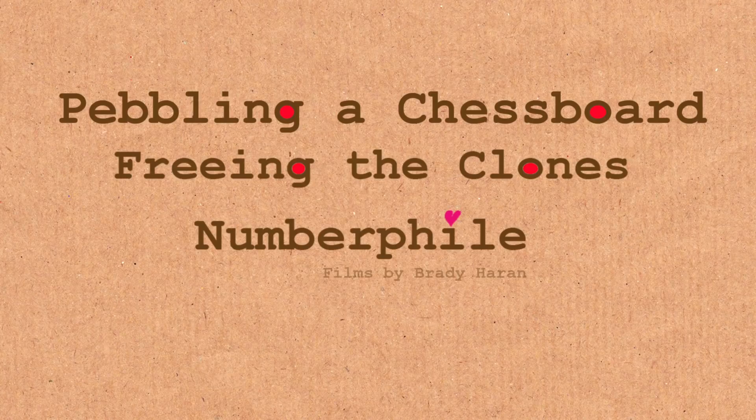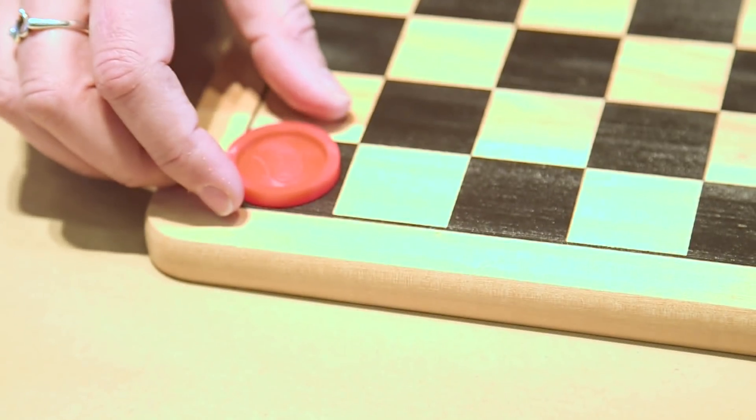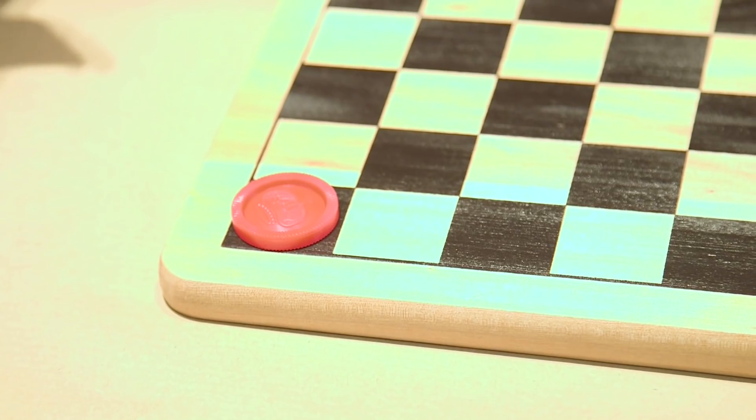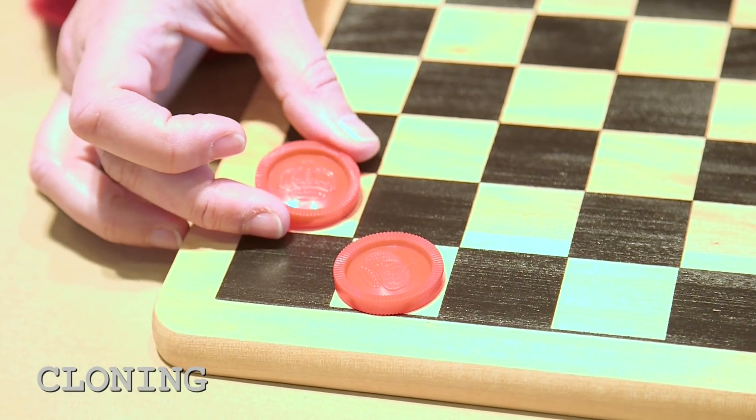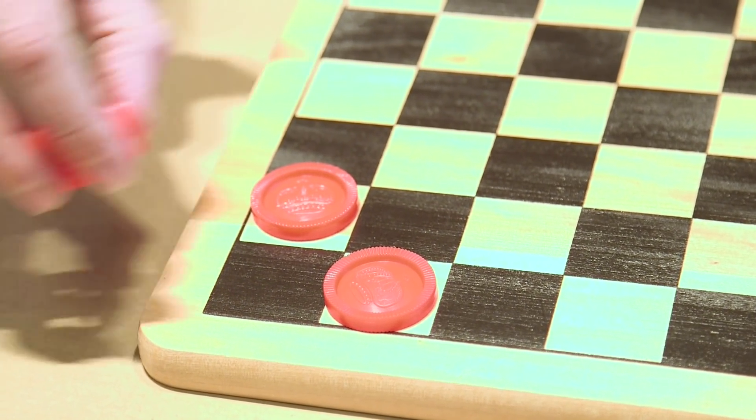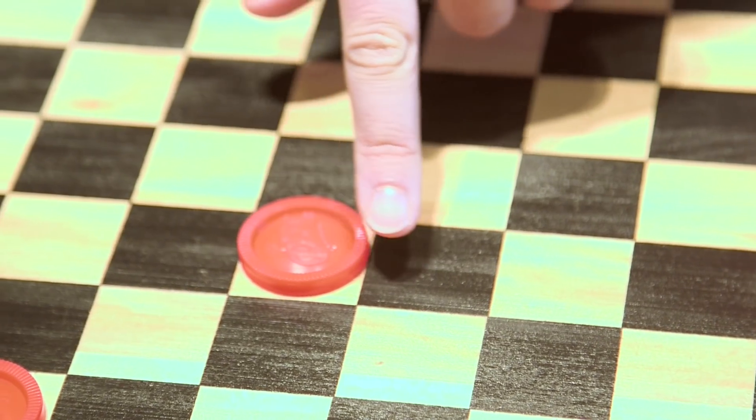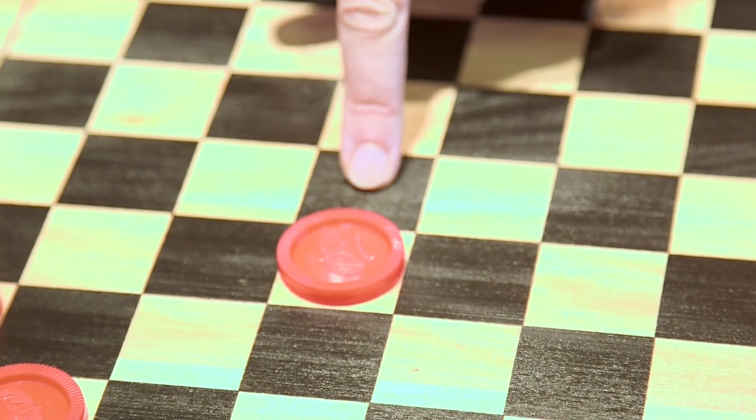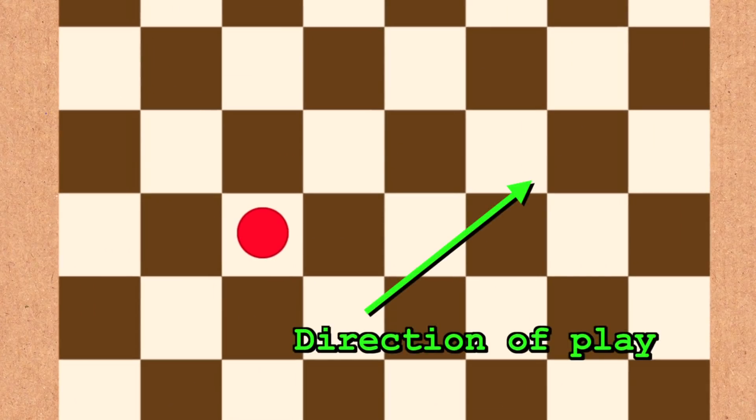Okay so we have pebbles which we will call clowns because they will be able to move according to the following rule. Every clown clones itself one to the right and one up and disappears. Now this move can be carried anywhere on the board as long as the position to the right and up are free and so again we can replace our guy by two clowns and remove him.